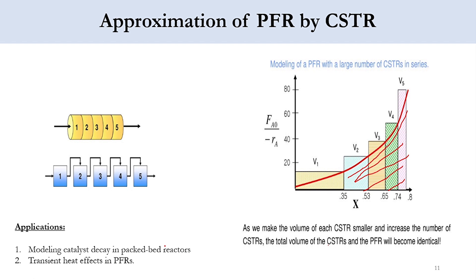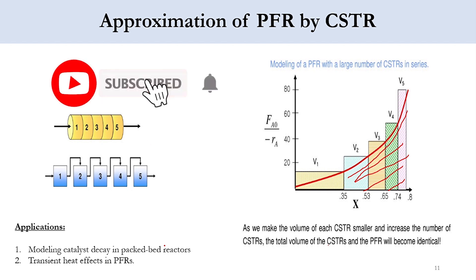That concludes today's lecture. We've seen how to connect reactors in series, derived volume equations for CSTR and PFR configurations, and shown that multiple CSTRs reduce total volume while PFRs in series maintain the same volume. In the next lecture, we will install a CSTR and then a PFR to observe the overall effect on reactor volume. Thank you — please like, share, subscribe, and click the bell icon for updates.